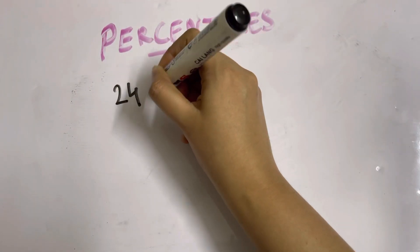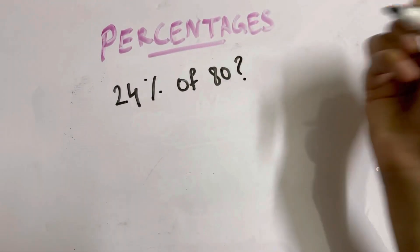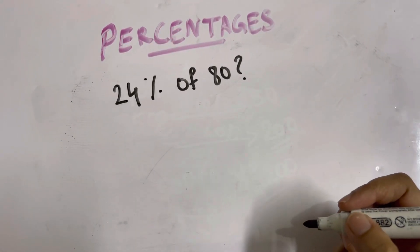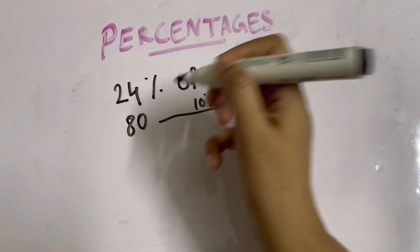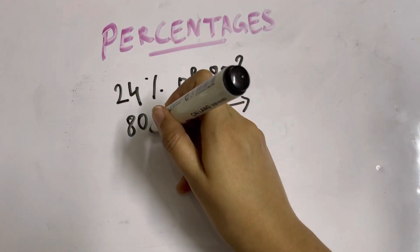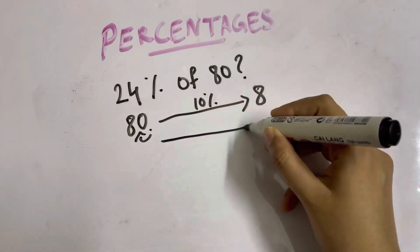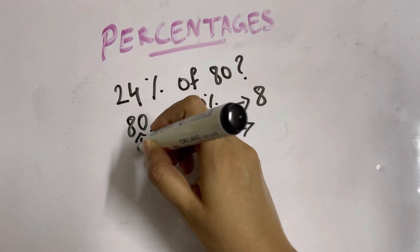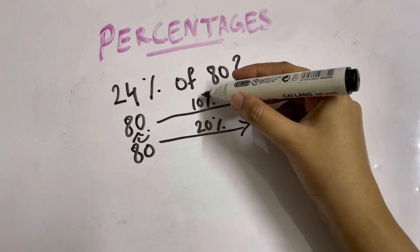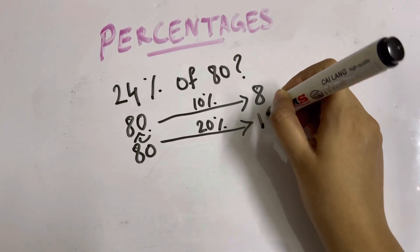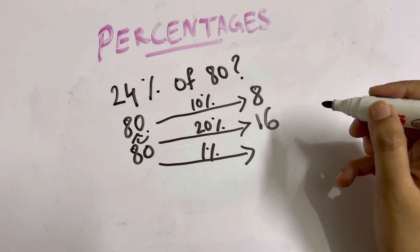Let's find out 24% of 80. We'll find 10% of 80 first: place the decimal and move one slot towards the left, so 10% of 80 is 8. Then 20% of 80 is twice 10%, so 2 multiplied by 8 is 16. Next, we'll find 1% because it helps us find 4%.